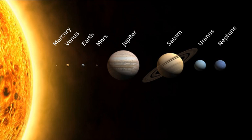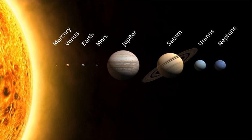The overall structure of the charted regions of the solar system consists of the Sun, four relatively small inner planets surrounded by a belt of mostly rocky asteroids, and four giant planets surrounded by the Kuiper Belt of mostly icy objects. Astronomers sometimes informally divide this structure into separate regions. The inner solar system includes the four terrestrial planets and the asteroid belt. The outer solar system is beyond the asteroids, including the four giant planets. Since the discovery of the Kuiper Belt, the outermost parts of the solar system are considered a distinct region, consisting of the objects beyond Neptune. Most of the planets in the solar system have secondary systems of their own, being orbited by planetary objects called natural satellites, or moons, two of which, Titan and Ganymede, are larger than the planet Mercury. The four giant planets have planetary rings, thin bands of tiny particles that orbit them in unison. Most of the largest natural satellites are in synchronous rotation, with one face permanently turned toward their parent.